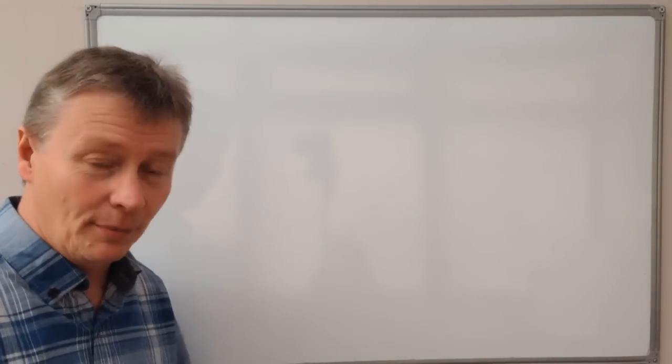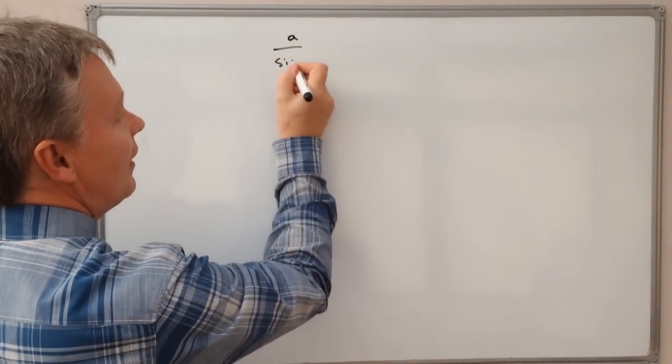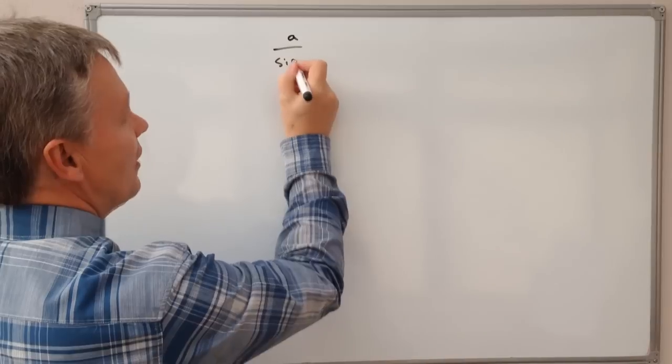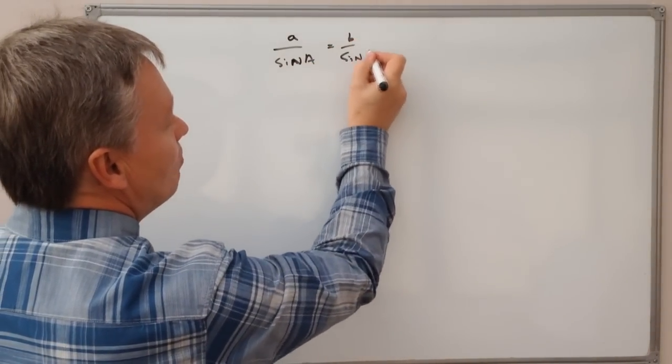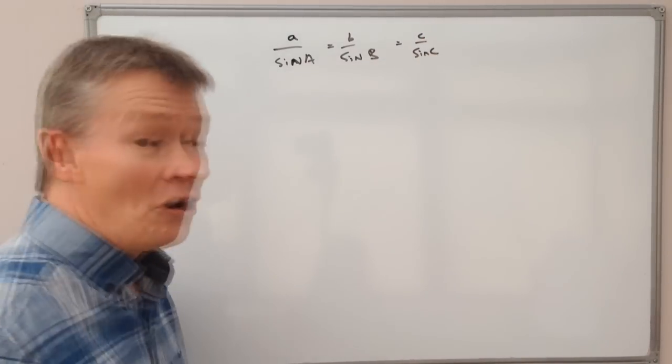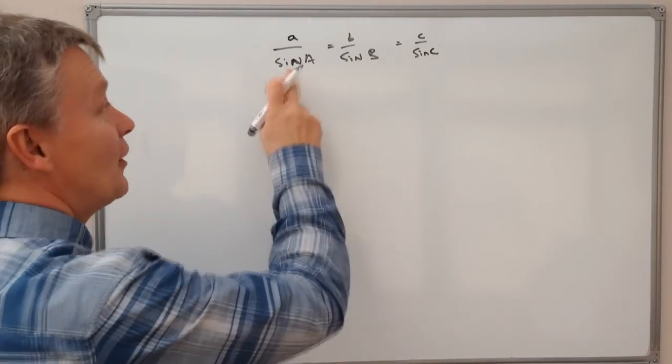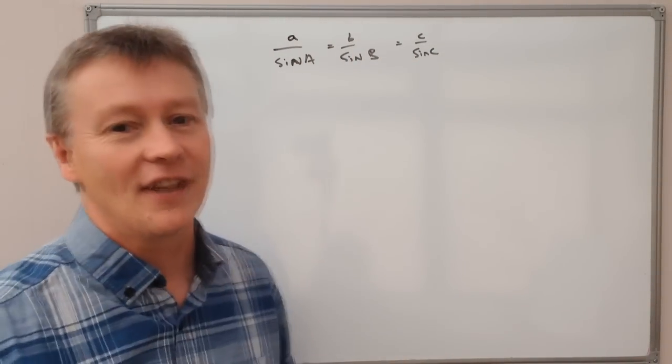And it's going to be presented to you in a couple of different ways. The first one is A over sine A equals B over sine B equals C over sine C. Or actually the other way around where you've got sine A over A and sine B over B equals sine C over C.